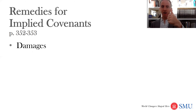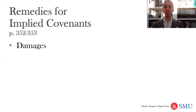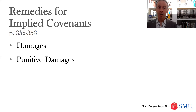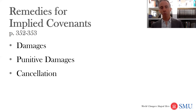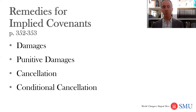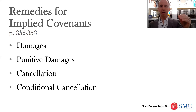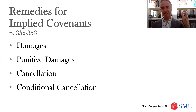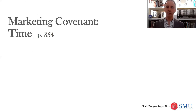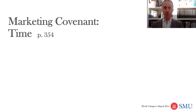What happens if you violate an implied covenant? You can get damages. If the oil and gas company failed to reasonably and prudently operate and that caused damage — you would have otherwise had more production and thus more royalty — there you go. You can also have punitive damages in very extreme cases of violation. You can have cancellation of a lease, and a bit more common is a conditional cancellation: if you failed to drill as soon as you should have, the lease will be canceled unless you drill very quickly.